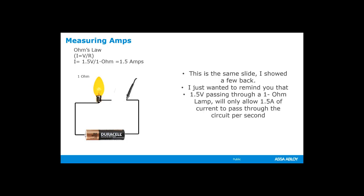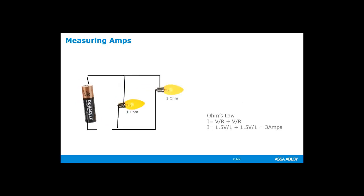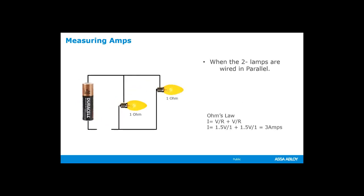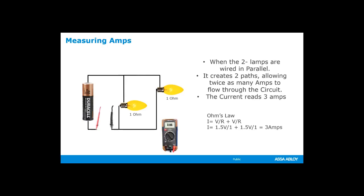One and a half volts passing through a 1-ohm lamp will allow only 1.5 amps of current to pass through the circuit per second. If you have two lamps wired in parallel, it creates two paths, allowing twice as many amps to flow through the circuit. The current flow is a total of three amps. So we're letting twice as many amps through because we've given them two paths. You have voltage divided by ohms: 1.5 divided by 1 is 1.5, plus 1.5 divided by 1 is 1.5 — anything divided by one is the number itself — so 1.5 plus 1.5 gives a total of three amps.